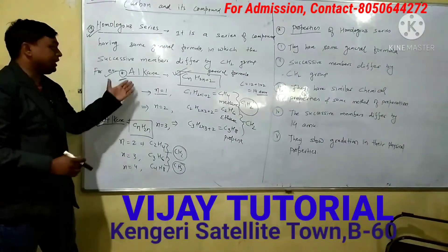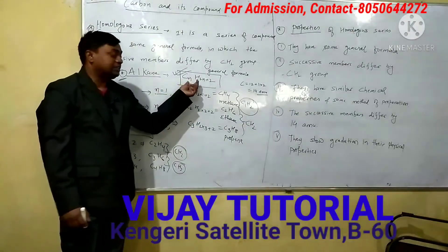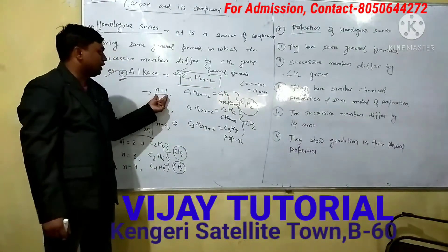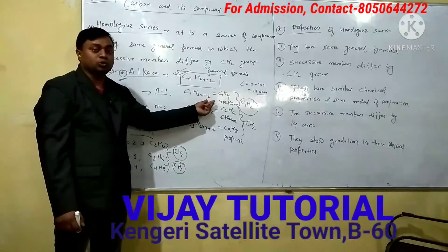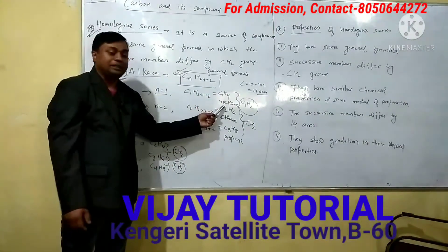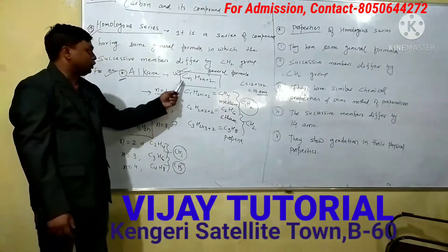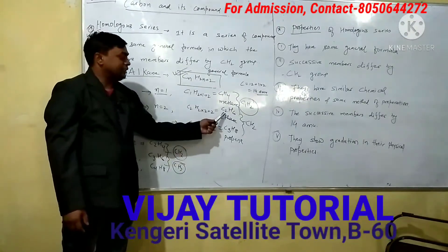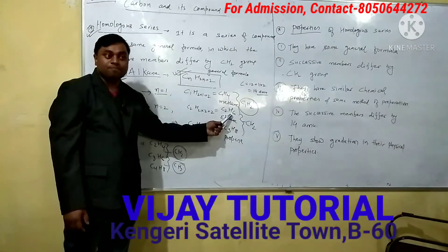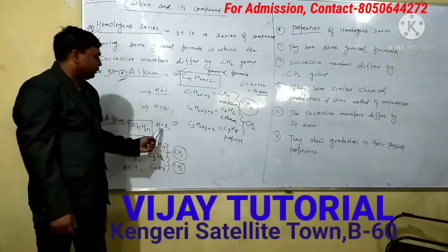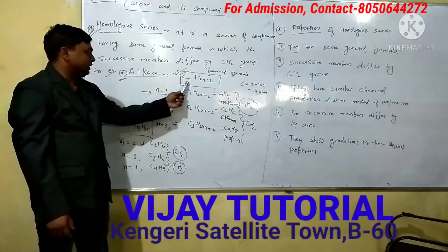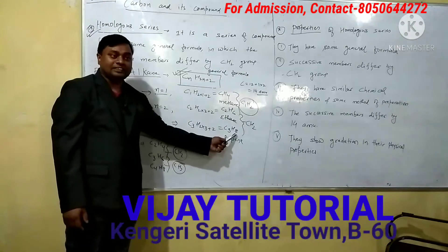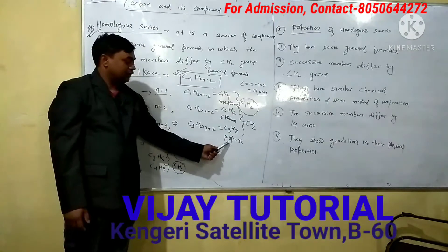For example, alkane — what is the general formula? CnH2n+2. If you put n=1, we get C1H(2×1+2), that is CH4, methane. Similarly, if you put n=2, we have C2H(2×2+2), that is C2H6, which is ethane. Similarly, if you put n=3, you get C3H(2×3+2), that is C3H8, propane.